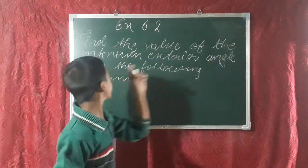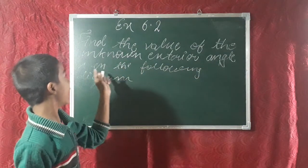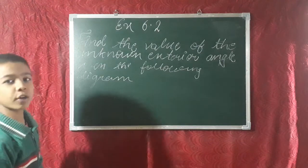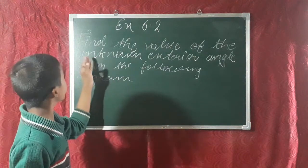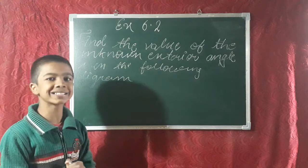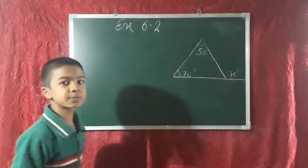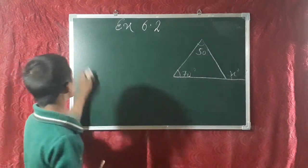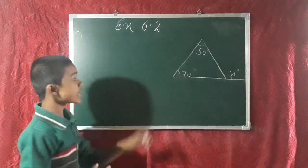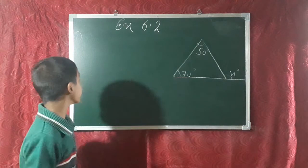Our first question says: find the value of the unknown exterior angle x in the following diagrams. We have to find the value of the exterior angle x. Moving to exercise 6.2, question number 1. This is our figure, and we have to find the value of the unknown exterior angle x.